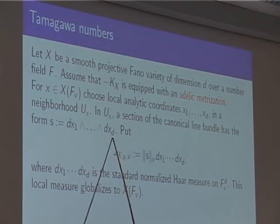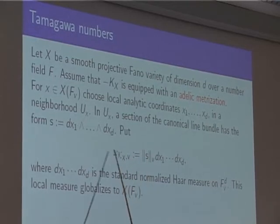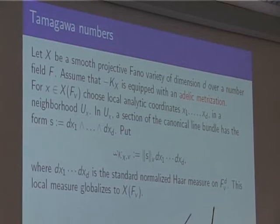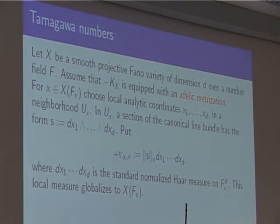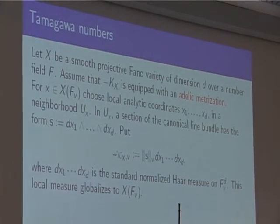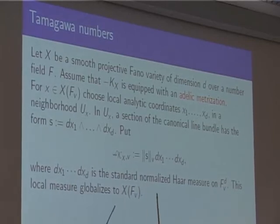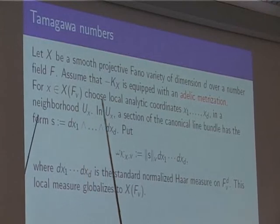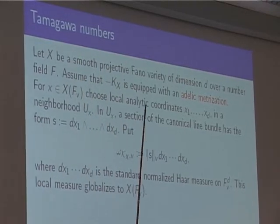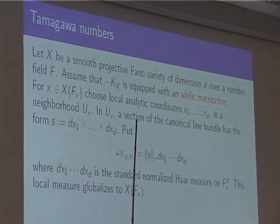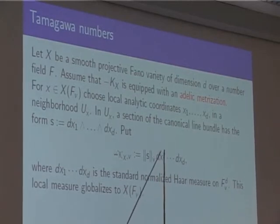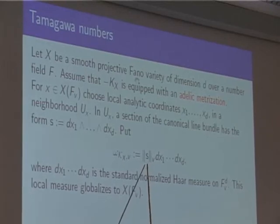There is a standard Haar measure on F_v^d, normalized so that the integral of O_v^d equals 1 divided by the square root of the local different to the power d. This local measure, defined in the neighborhood of a v-adic point, globalizes to a measure on X(F_v): the factor from the change of coordinates — the v-adic absolute value of the Jacobian — is compensated by a factor coming from the metrization, so the measure is globally well-defined in the v-adic sense.